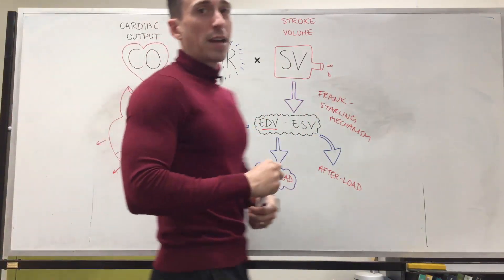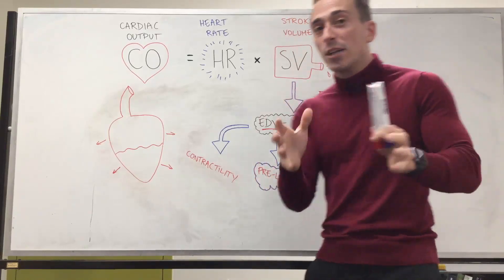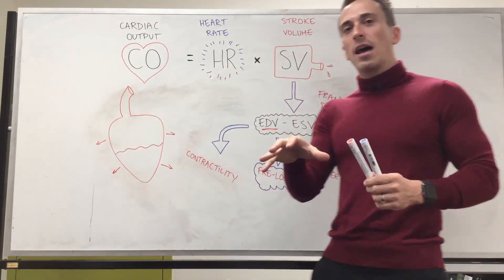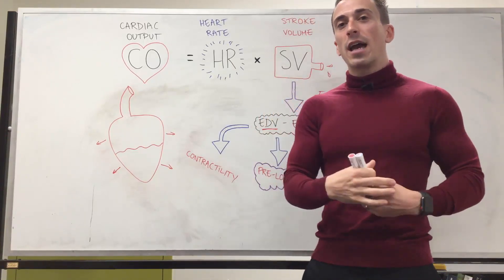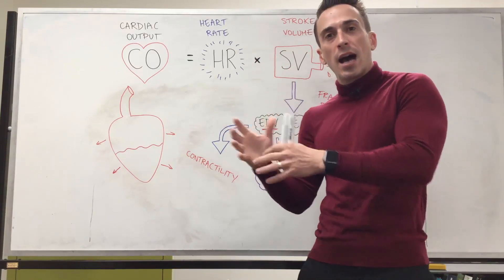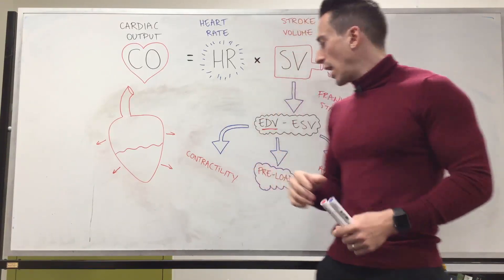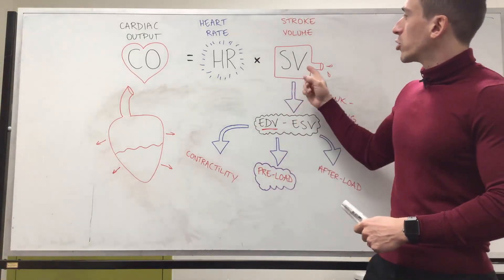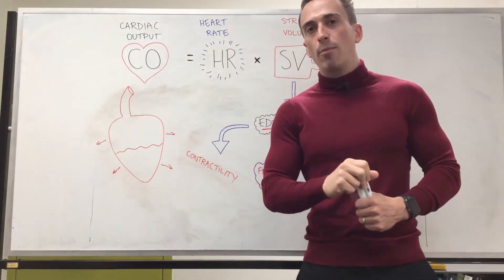Now things that can affect preload include, well the major thing that affects preload is venous return. So obviously you're going to have your inferior superior vena cava that's returning deoxygenated blood from the body back to the heart and if you have a greater filling you're going to have a greater preload. If you have a greater preload you're also going to have a greater stroke volume and a greater cardiac output.